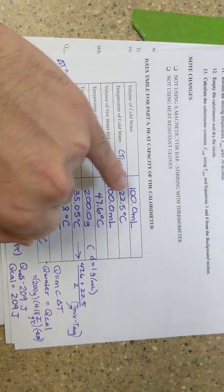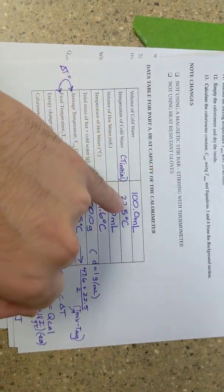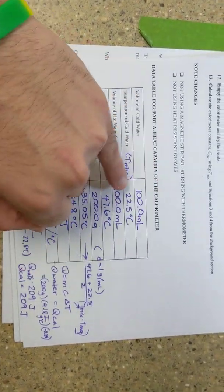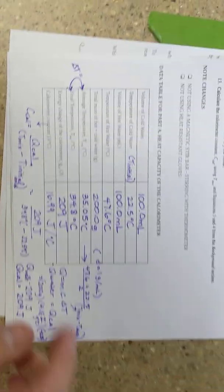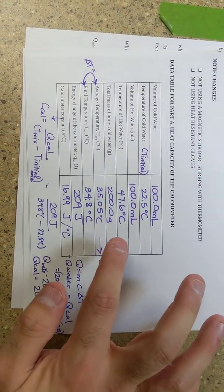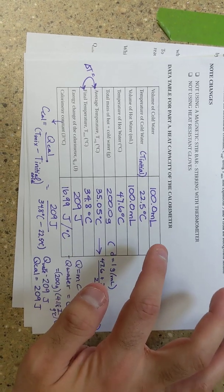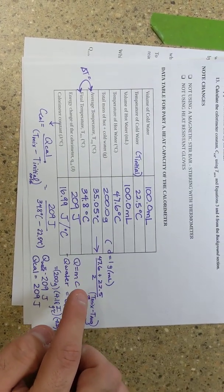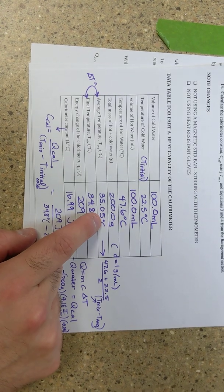Now the total mass is, now remember the volume is equal to the mass for water, so I just add the two. I get 200 and I put grams. And now my average temperature, you're going to need to get the average temperature. I just took the two temperatures that I started with initially, added them together, and then divided by two to get the average. I'm calling that T average.